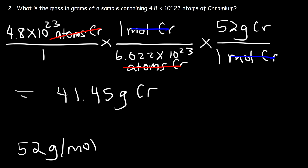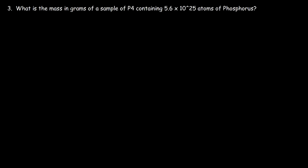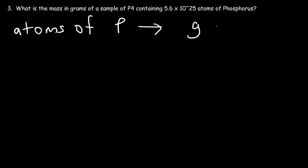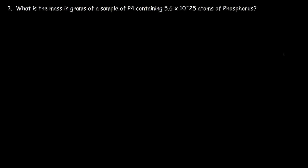That's a simple way to convert atoms to grams. Number three: what is the mass in grams of a sample of P4 containing 5.6 times 10 to the 25 atoms of phosphorus? We have atoms of phosphorus and we need to convert to grams of P4. This problem is a little bit harder — more steps are involved, so feel free to tackle it first if you want to.